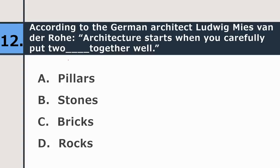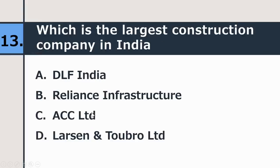Twelfth question: according to German architect Ludwig Mies van der Rohe, architecture starts when you carefully put two bricks together well — the correct answer is bricks. Thirteenth question: which is the largest construction company in India — DLF India, Reliance Infrastructure, SSC Limited, or Larsen and Toubro Limited? The correct answer is Larsen and Toubro Limited, also known as L&T.